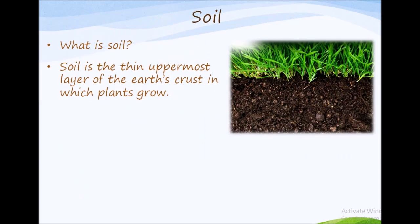What is soil? Soil is the thin uppermost layer of the earth's crust in which plants grow. It consists of organic and inorganic materials, water and air.